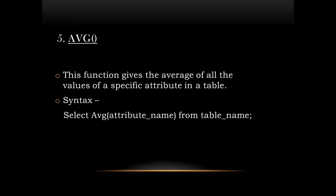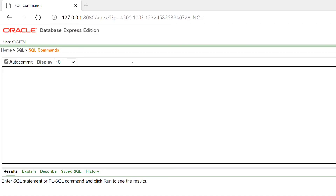The last function is AVG. This function returns the average of a specific attribute or column in a table. The syntax of using this function in SQL is given on the screen. Let's look into the example — we will find the average salary using the AVG function.